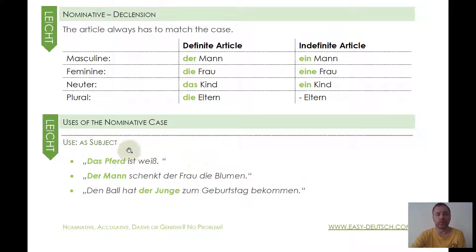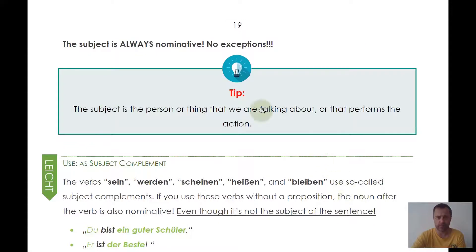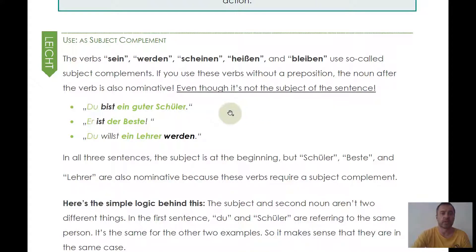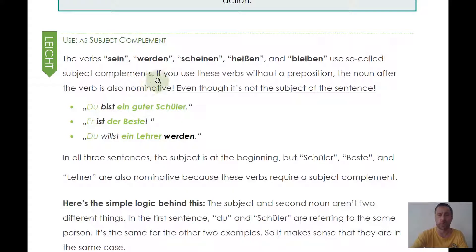Let's look at the use of the nominative case. We already talked about its use as a subject — the subject is always nominative, there is no exception. But you also have to use it as a so-called subject complement. The verbs 'sein,' 'werden,' 'scheinen,' 'heißen,' and 'bleiben' use subject complements or nominative complements — meaning you have two nouns or pronouns in nominative case.